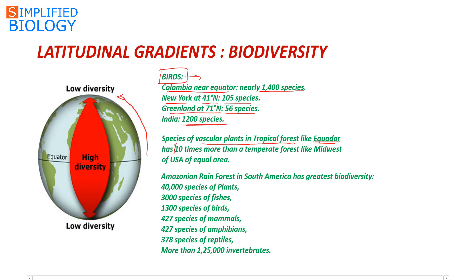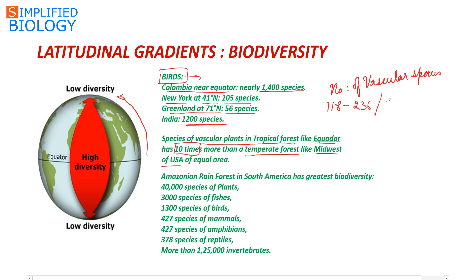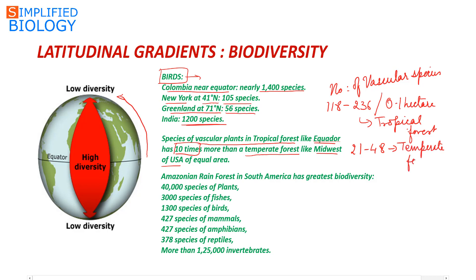A tropical forest has 10 times more vascular plants than a temperate forest lying in the midwest of the USA, both being of equal area. The number of vascular plant species is 118 to 236 per 0.1 hectare in a tropical forest, 21 to 48 in a temperate forest, and just 0 to 10 in the Arctic region.